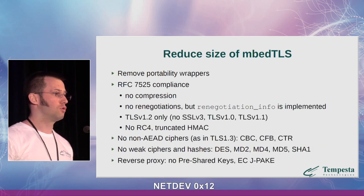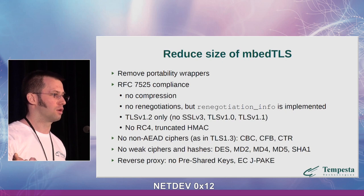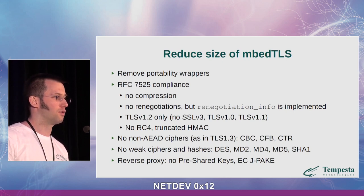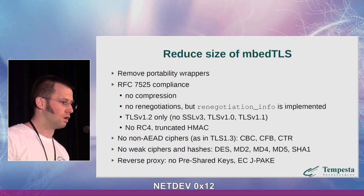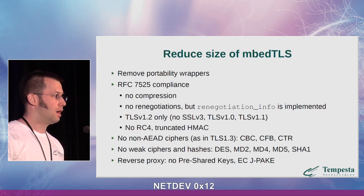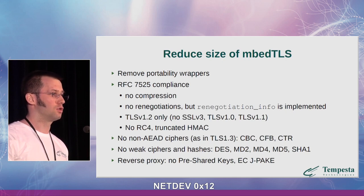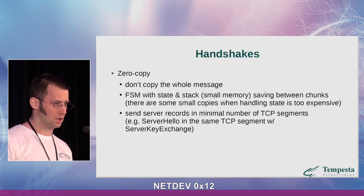With MbTLS, we first reduced the size of the library. We removed portability wrappers for Windows and other architectures. Next, we removed everything not in compliance with RFC 7525 — in particular, renegotiations and weak cipher suites. We also removed all non-authenticated encryption cipher suites like CBC. Finally, as a server-side web accelerator, we do not need pre-shared or password cryptography, so we evicted pre-shared keys and ECJPAKE algorithms.